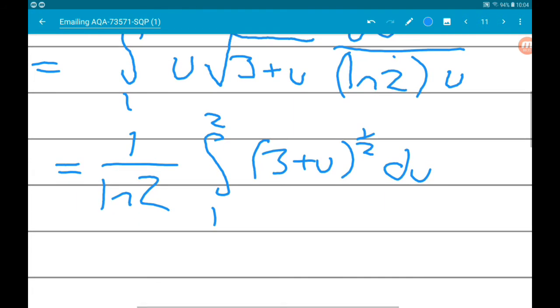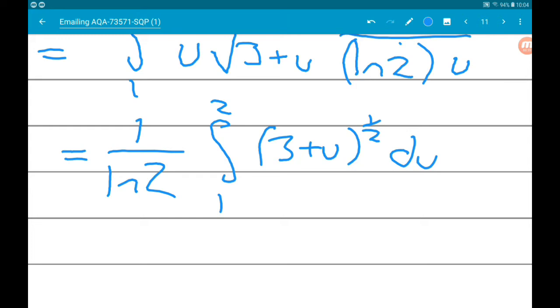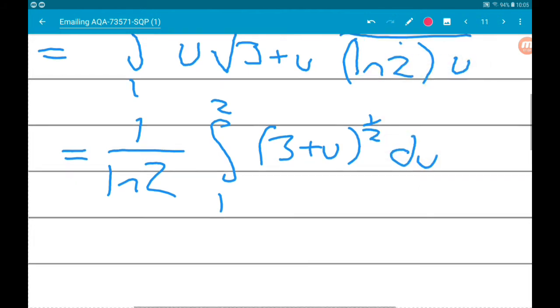So now we need to integrate (3 + u) to the power of one half. We could use substitution again, we could actually have used a different substitution at the start, u equals 3 plus 2^x, that would have made this bit easier. But it's not really that tricky. There's nothing funny going on with the u inside of the bracket. It's not got a number multiplying it and it's not got a power other than 1.